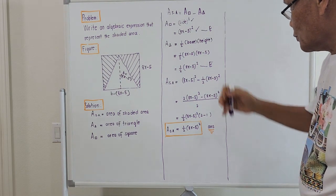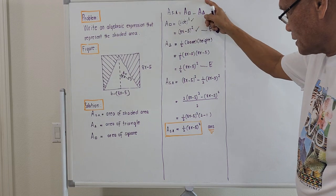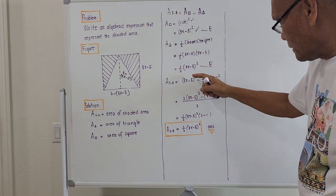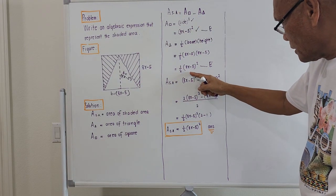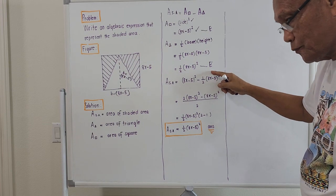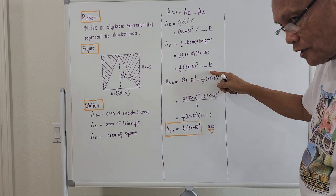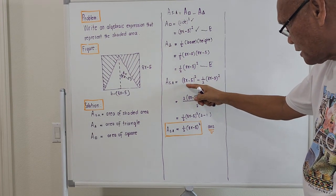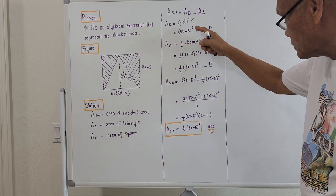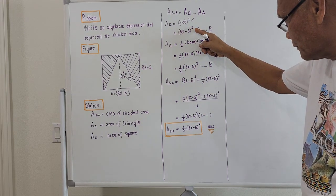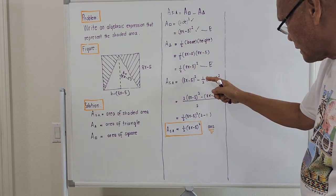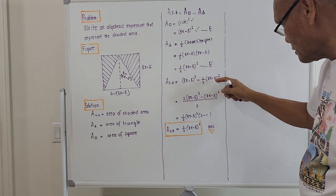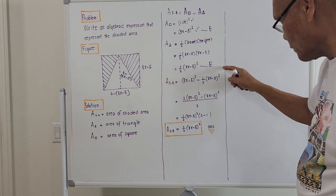Using the formula, the area of the shaded region equals the area of the square minus the area of the triangle. That gives us (8x − 5)² minus one half times (8x − 5)².